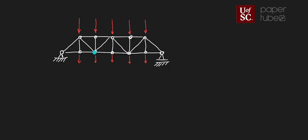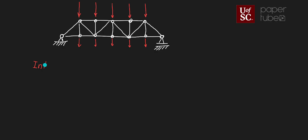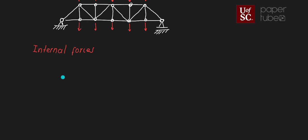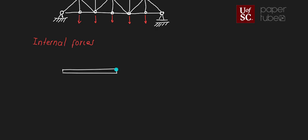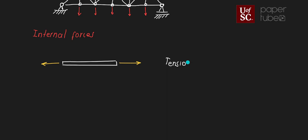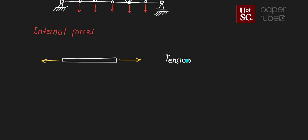With simple trusses, the structural elements are going to be either in tension or compression. If I take one of those elements and pull it on the side, and I see that the internal forces go outward in that direction, that means the structural element is in tension — the forces are trying to pull that element apart from each end.